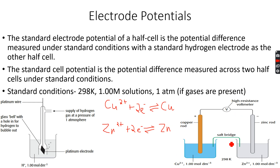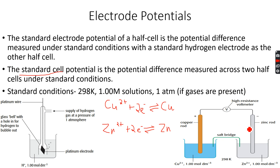The circuit also includes a high-resistance voltmeter, since we are measuring electrode potentials in volts, and a salt bridge. The purpose of the salt bridge is to complete the circuit — electrons can flow through the wire and voltmeter, but we also need ion flow between the two solutions. The salt bridge, made of a gel of potassium nitrate, allows ion flow between the two electrolytes. This is what a standard electrochemical cell looks like, and the electrode potential difference between the two electrodes gives a reading on the voltmeter.